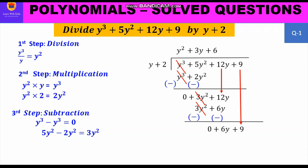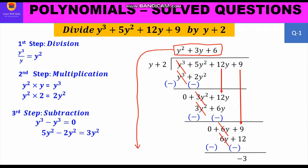Multiplication: 6 × (y + 2) = 6y + 12. Write this below the new dividend. Subtraction: change signs to −6y and −12. Then 6y − 6y = 0, and 9 − 12 = −3. So the quotient is y² + 3y + 6 and the remainder is −3.